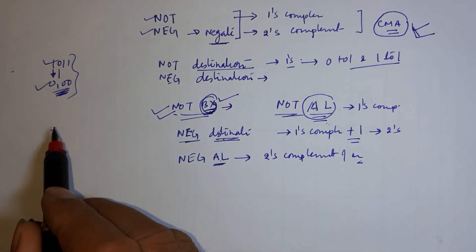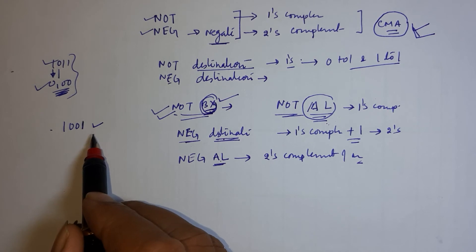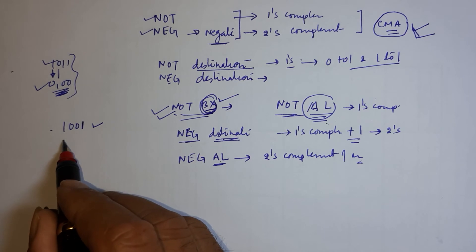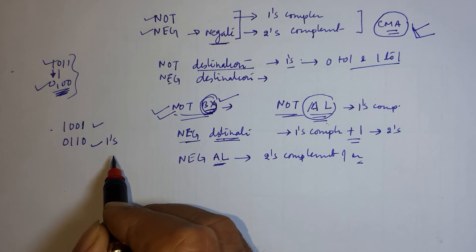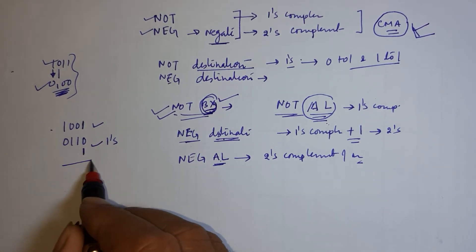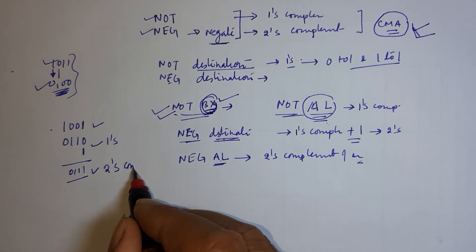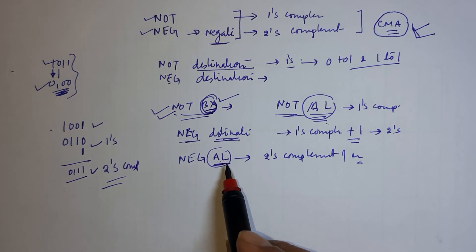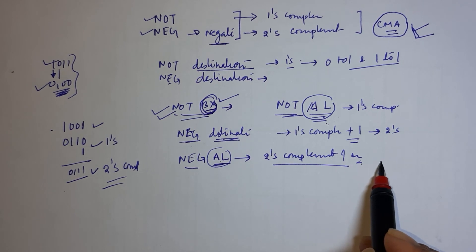Means suppose I am taking an example. This is a number and you have to find two's complement. Then how can you find this? Firstly, get one's complement of this. This will be 0, 1, 1, 0. This will be one's complement and then add one. Here 0, 1, 1. This will be two's complement of that number. So here whatever content is available in AL that will do two's complement of that number.